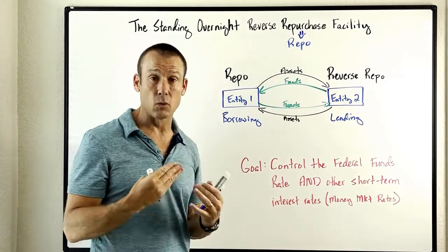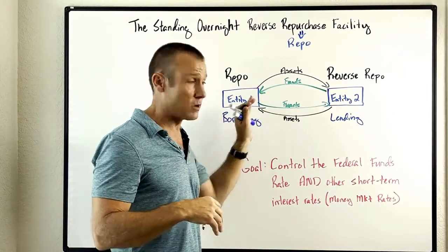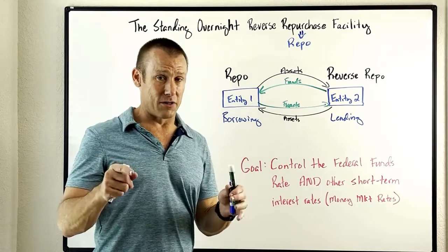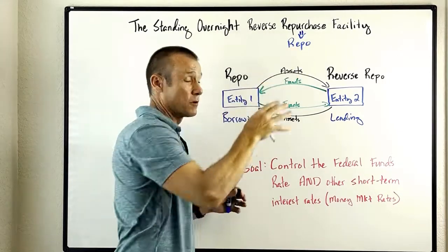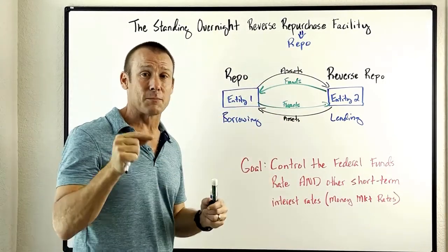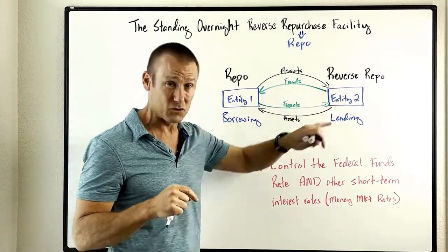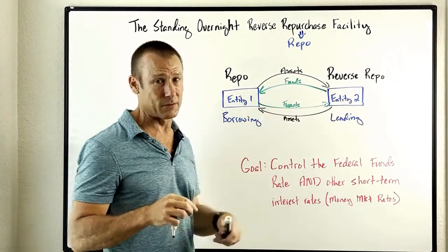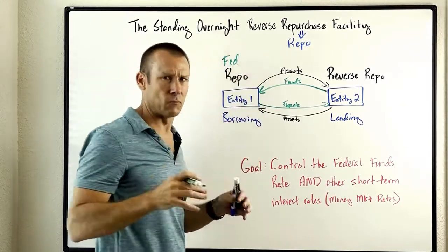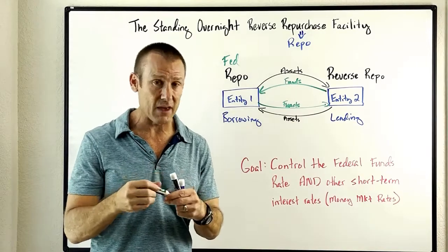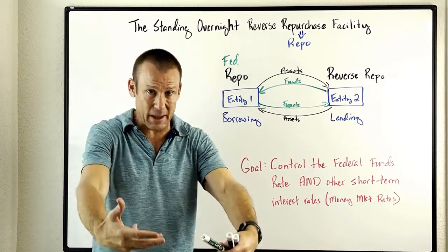That's what a repo looks like — you've got the repo and the reverse repo. Every single situation like this, one entity's doing the repo, one's doing the reverse repo. Now, there's one little twist: the Fed calls it the standing overnight reverse repurchase facility. The problem is the Fed is not doing the lending. The Fed has actually named this facility from the bank's perspective.